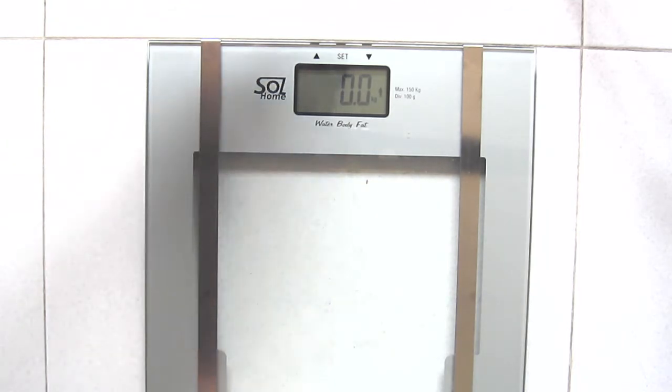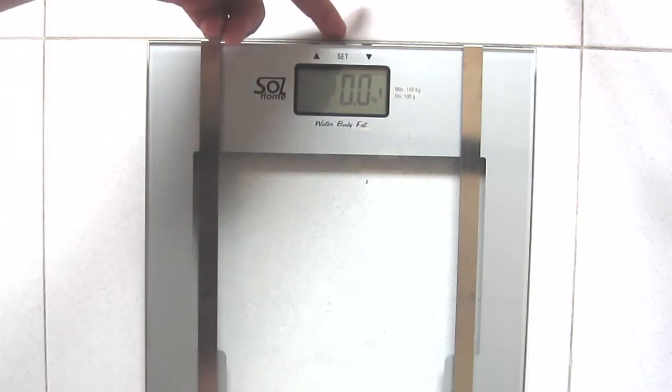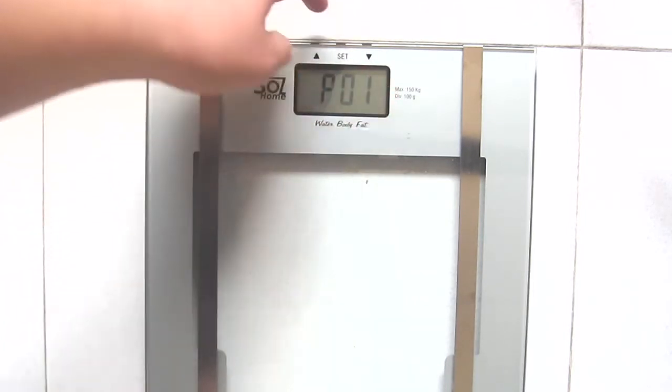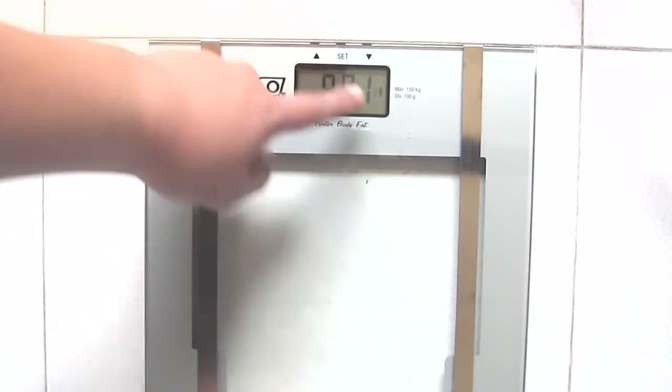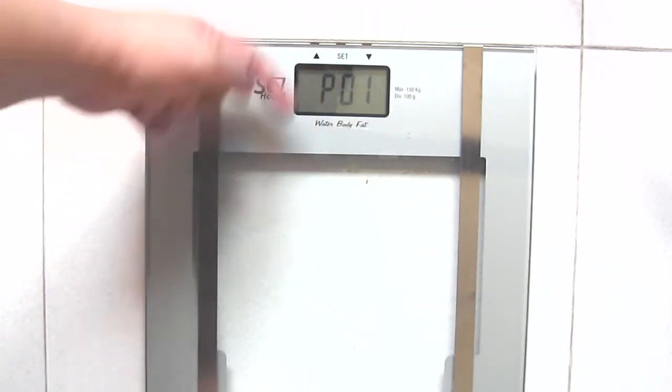So since I'm the only one using it, I use program 1. So I'll press set in program 1, and I'll set again. This is to set my gender, choose male. You can see the little skirt. Once you're done, set.